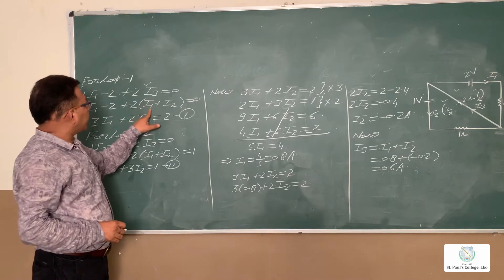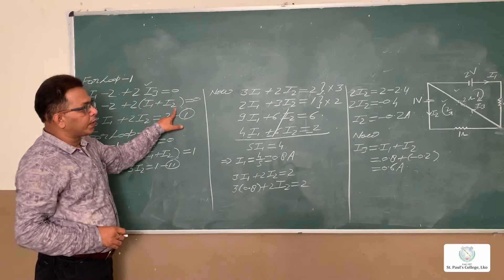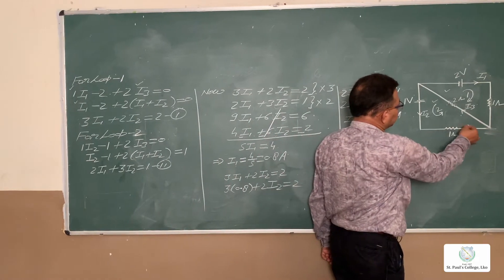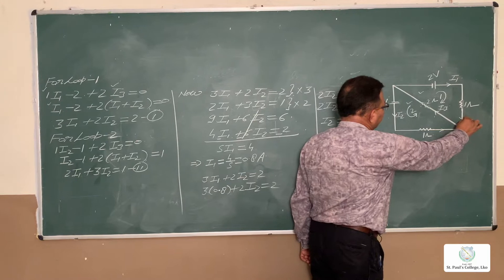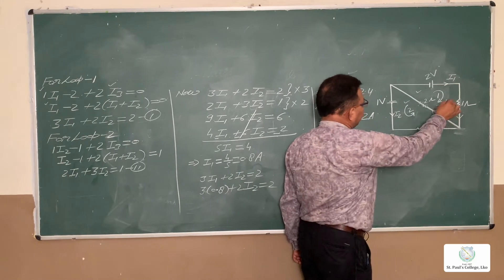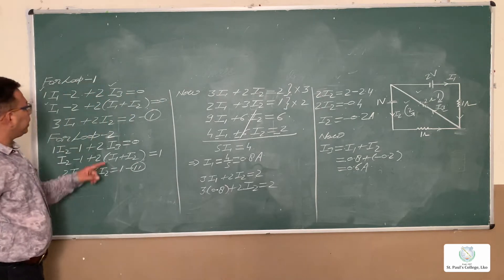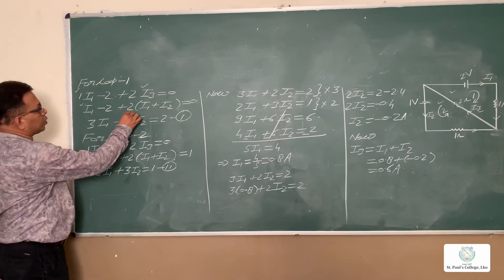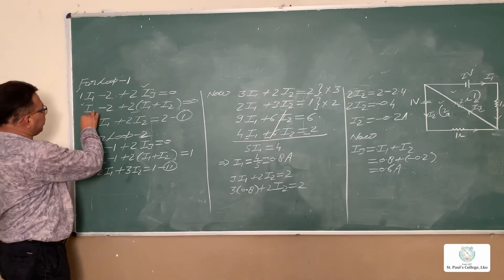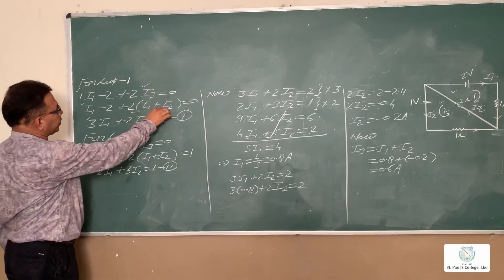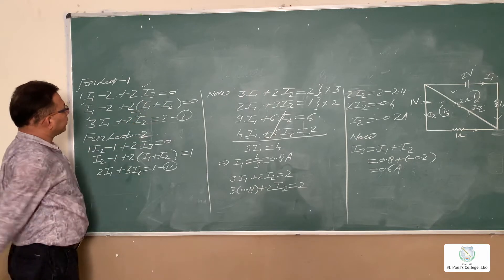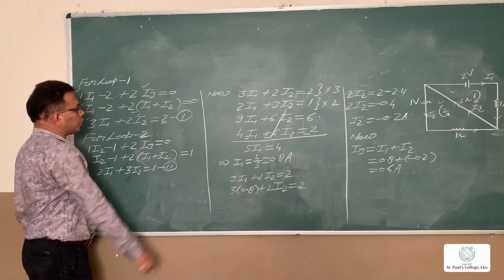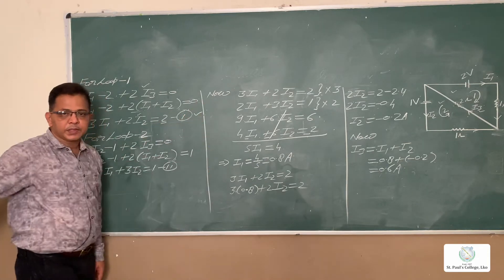In place of I3, you will write I1 plus I2 by applying Kirchhoff's first law — current flows through both branches so the total current is I1 plus I2. Solving: 2·I1 plus I1 gives 3·I1, and 2·I2, so the equation becomes 3·I1 plus 2·I2 equals 2. This is Equation 1.